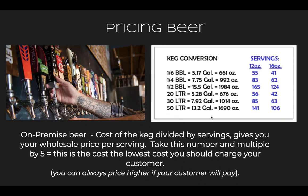For pricing beer, we use a keg conversion chart. Restaurants can sell beer in either 12-ounce or 16-ounce portions. The conversion chart shows how many servings you get out of each keg size. A sixth of a barrel equals 5.17 gallons, or 661 total ounces. If serving in 12-ounce glasses, you get 55 servings; if serving in 16-ounce pints, you get 41 servings.